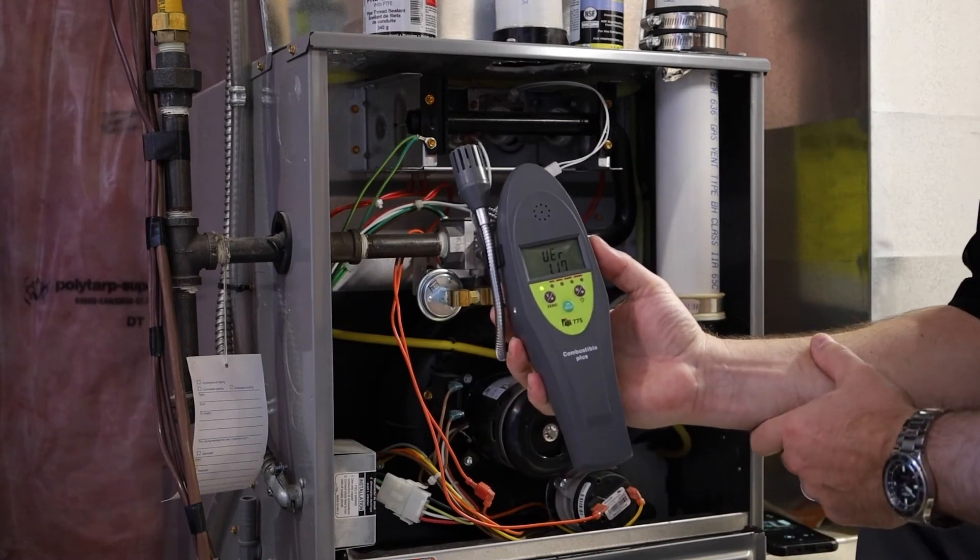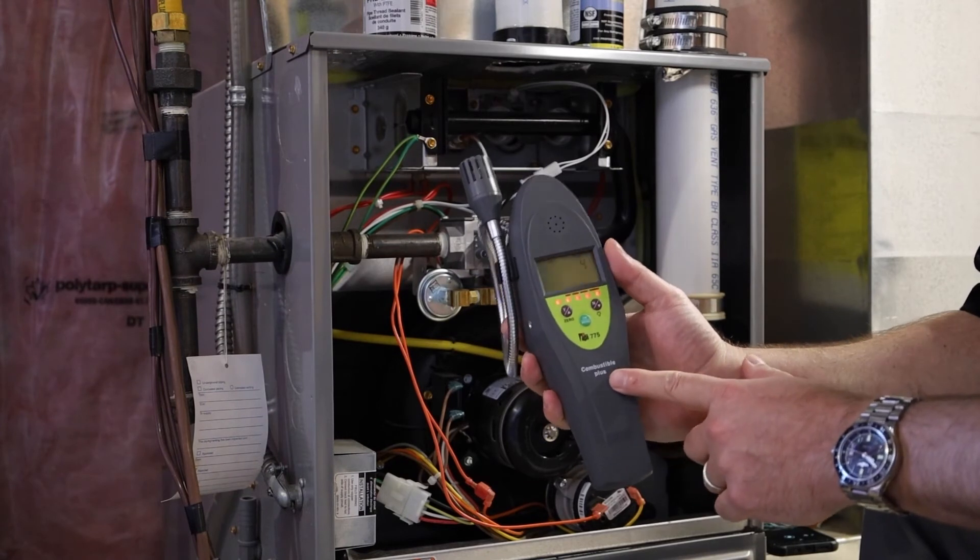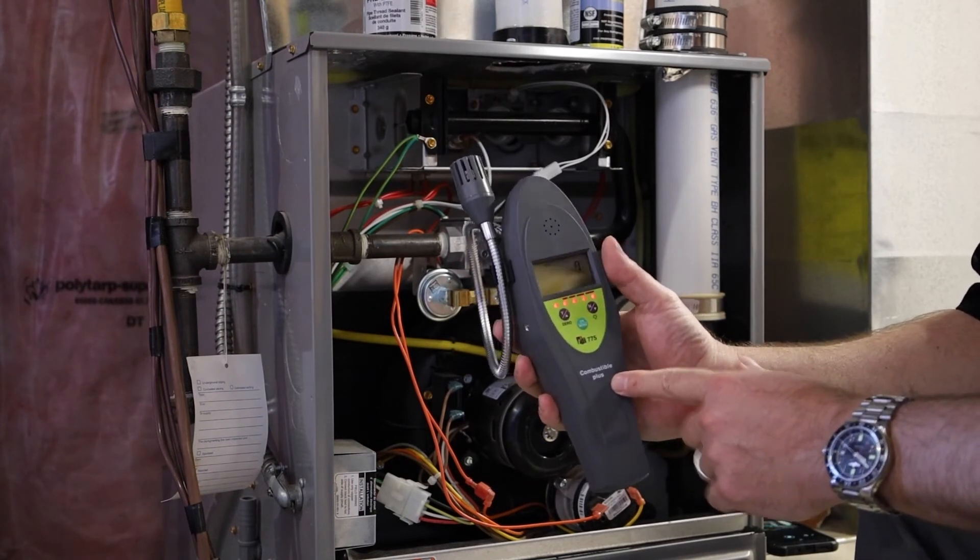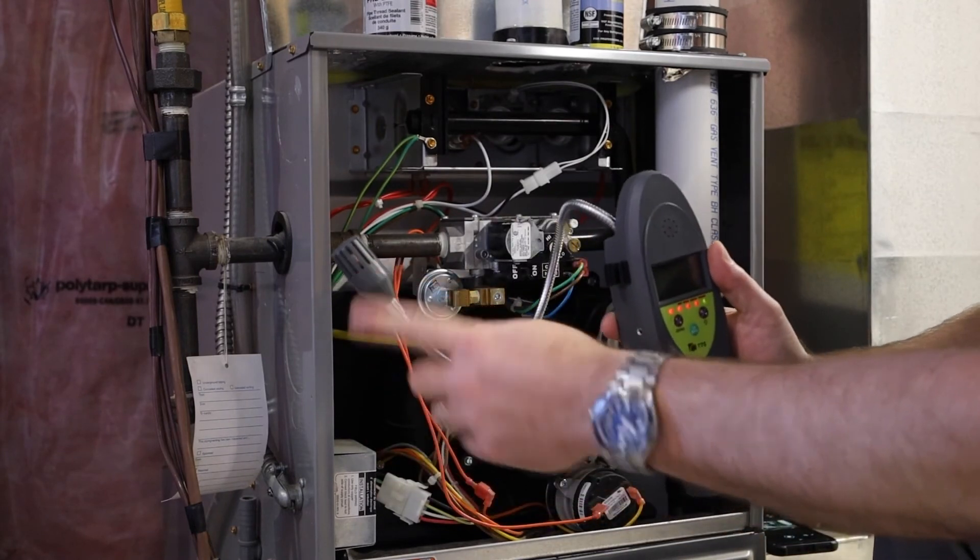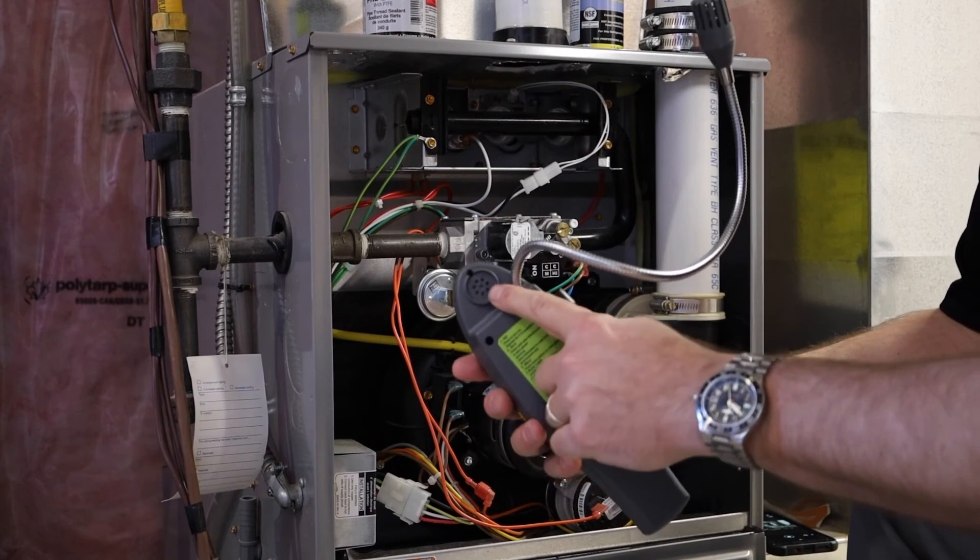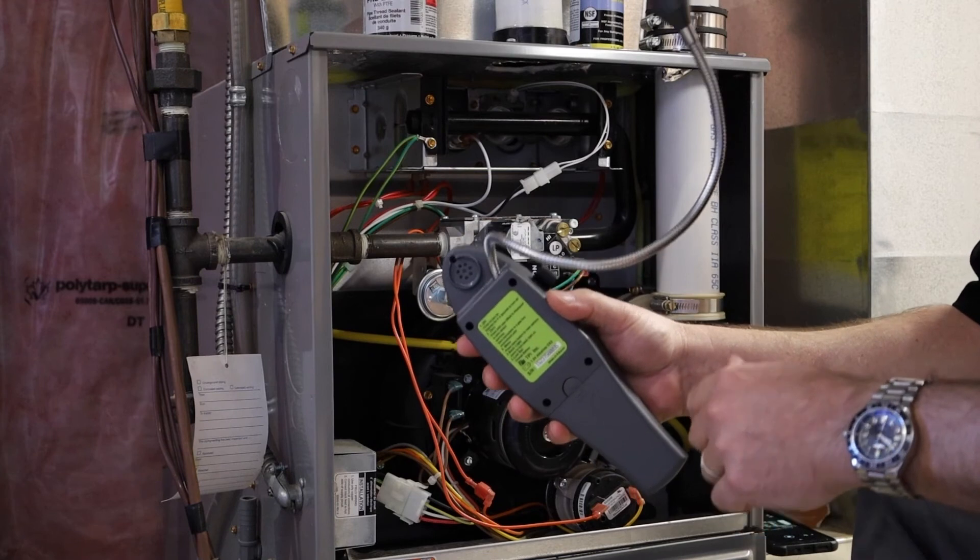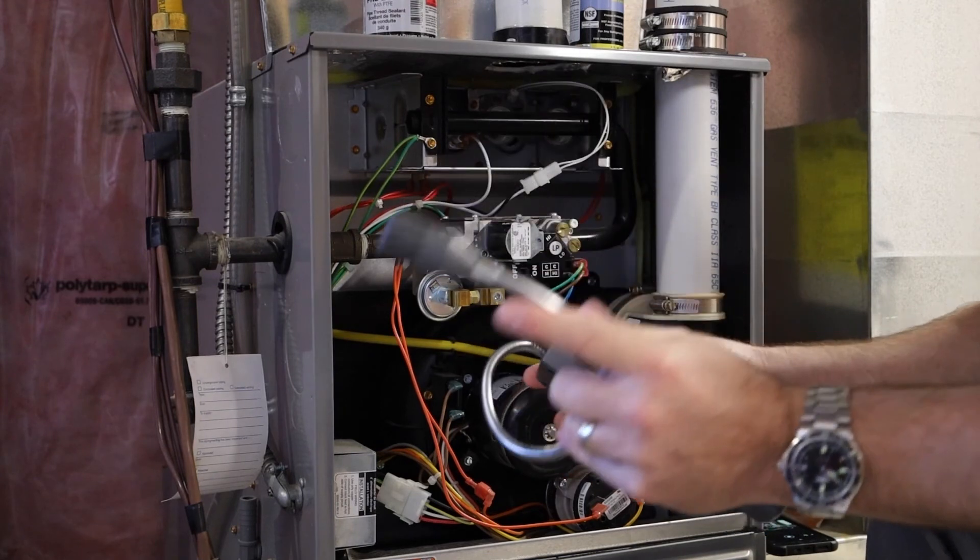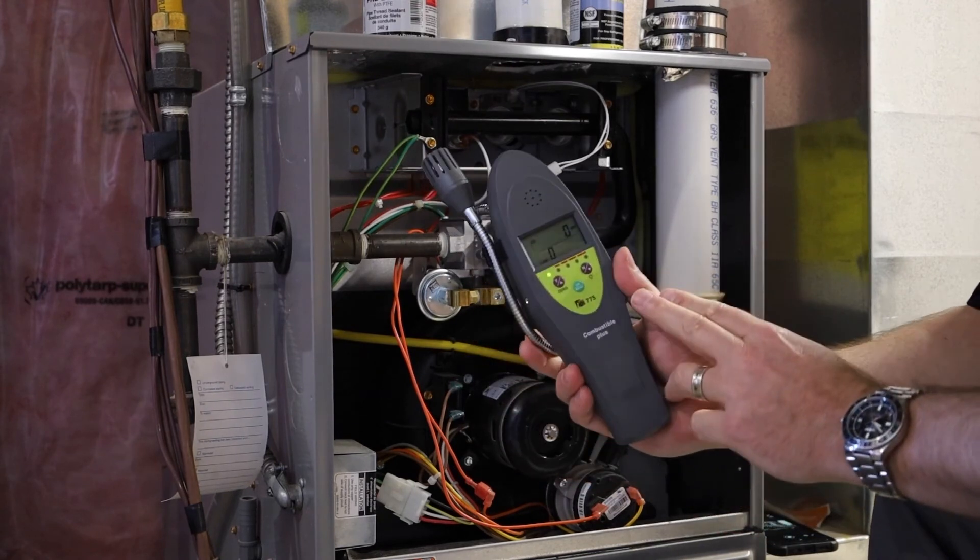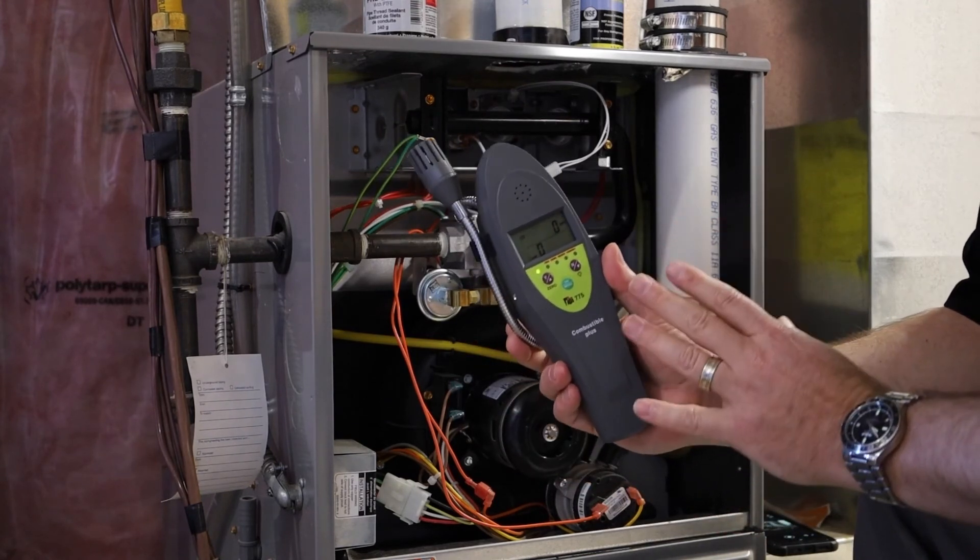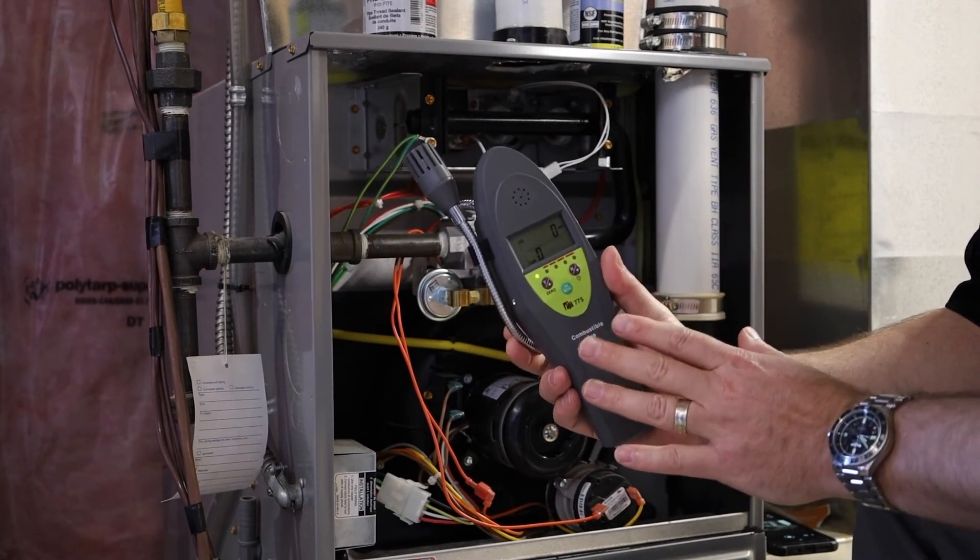Here's the 775 combustible plus. And the plus means it actually will measure CO, carbon monoxide. So it's got the flexible wand. And this is your combustible leak sensor. But if you turn the unit back over, right at the top here, that is where your CO sensor is. So it's going to be measuring carbon monoxide at the same time. So you're basically multitasking. Now with this unit, because it has a CO sensor in it, you have to turn it on outside in fresh air. You want to zero that CO sensor at zero parts per million.